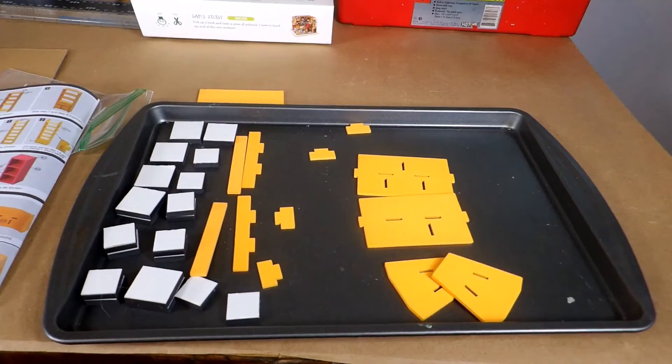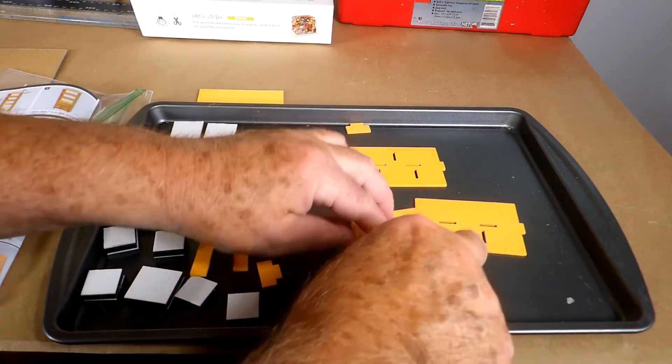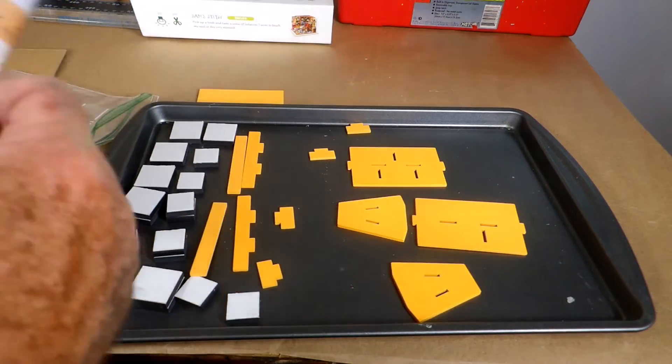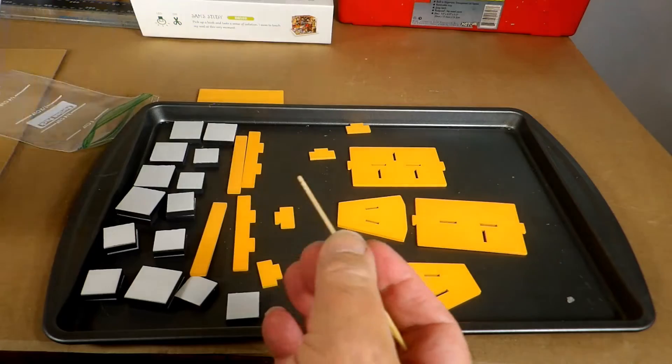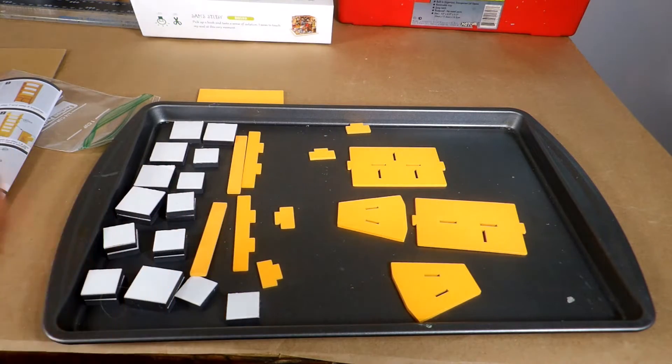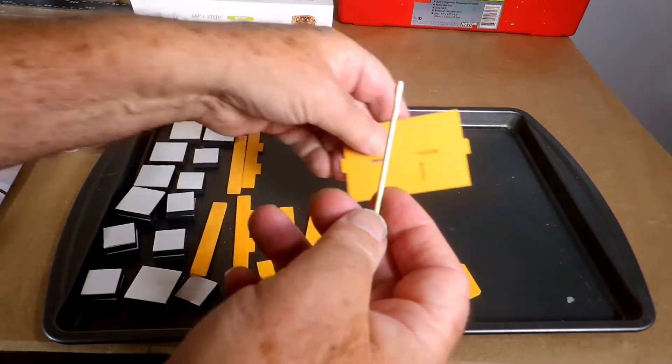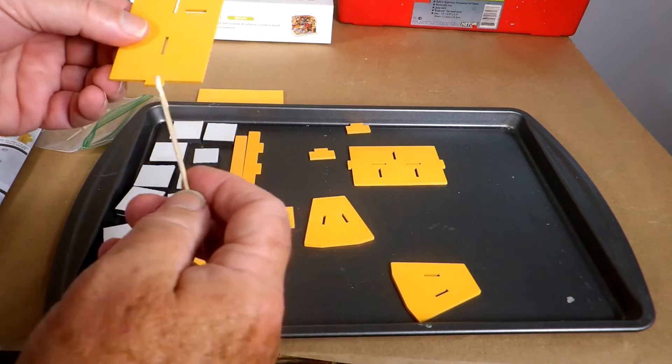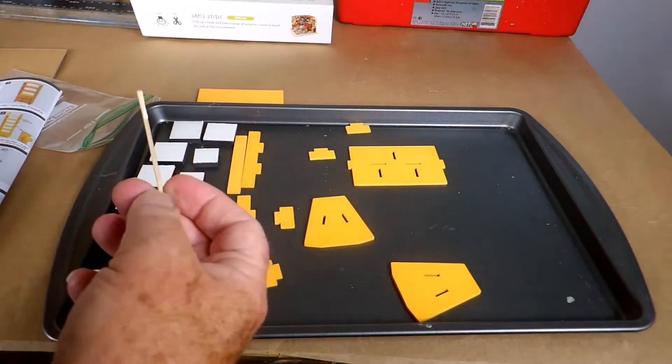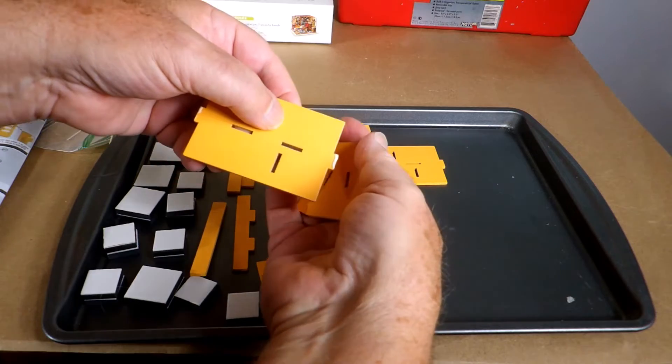So we have our pieces now laid out and the first thing we're going to do is to put together the main part of it which is right here. We're going to put these together and basically just take a little glue and make sure we glue things in the right direction. We'll put the glue on, just a little glue on each one of these, and then we're going to put this in here right here and pop it on there.